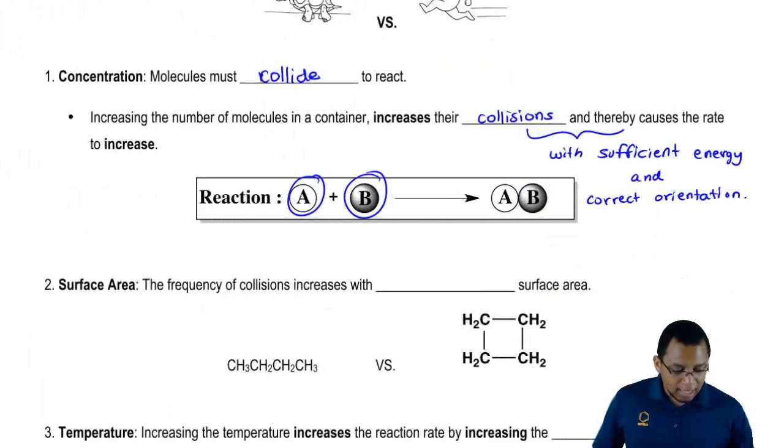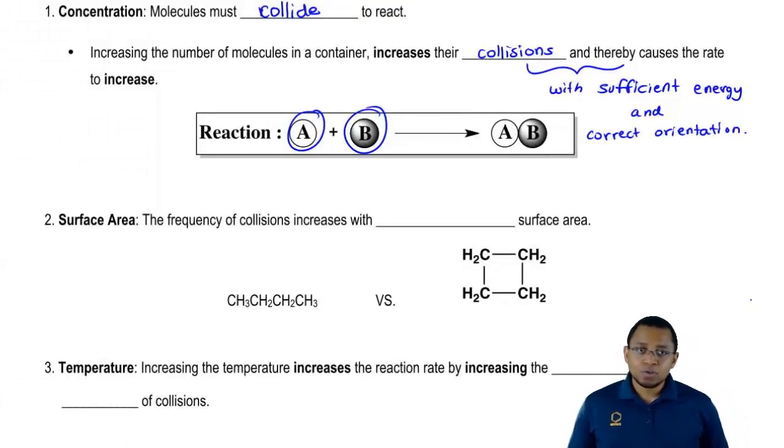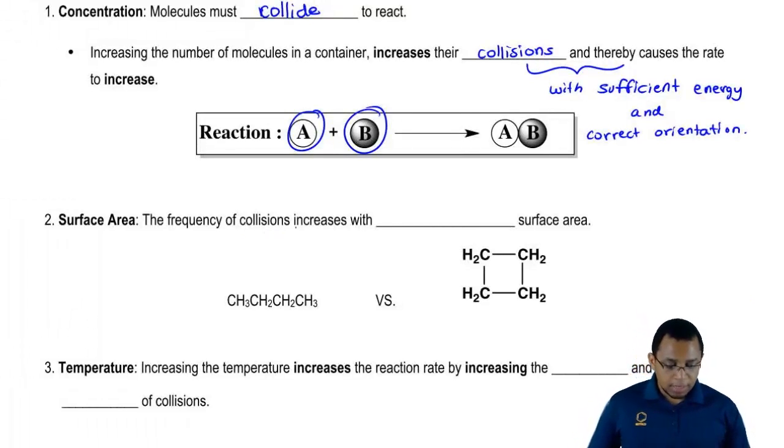The second factor that we have to look at is surface area. Basically, the greater the surface area, the greater the chance the reaction will occur and the faster the reaction can occur. The frequency of collisions increases with increasing surface area.